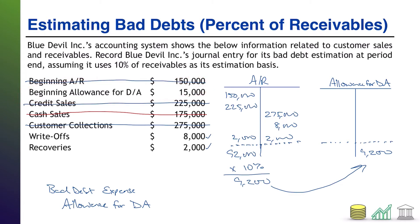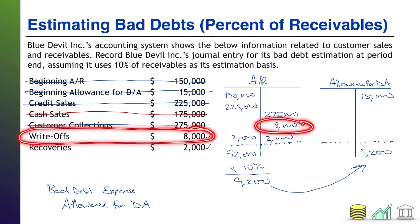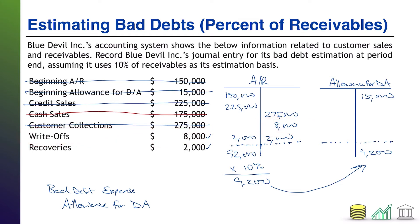We were given the beginning allowance for doubtful accounts balance: $15,000. I can scratch that out. The write-offs and recoveries also affect the allowance account. When you write off a customer's account, not only do you take the AR away, but you also reduce the allowance, because that is no longer an estimate you need — that came true. So that reduces allowance for doubtful accounts, and we've used that — I'll scratch it out.